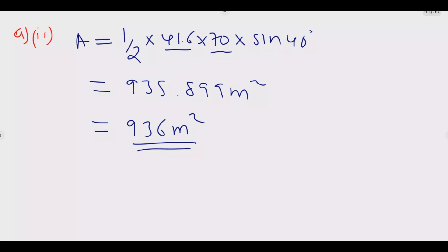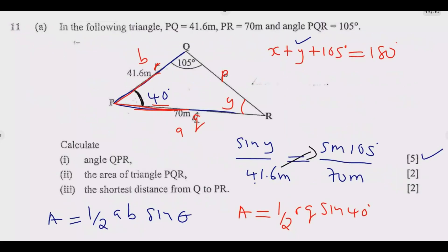Let us move to the last question: the shortest distance from Q to PR. This is a question you expect to have in an exam. Once you find the area, if you get it correct, this question becomes easier and straightforward. You need to understand the principle. We're looking for this line. For the shortest distance, this angle should be 90 degrees—perpendicular to this one.